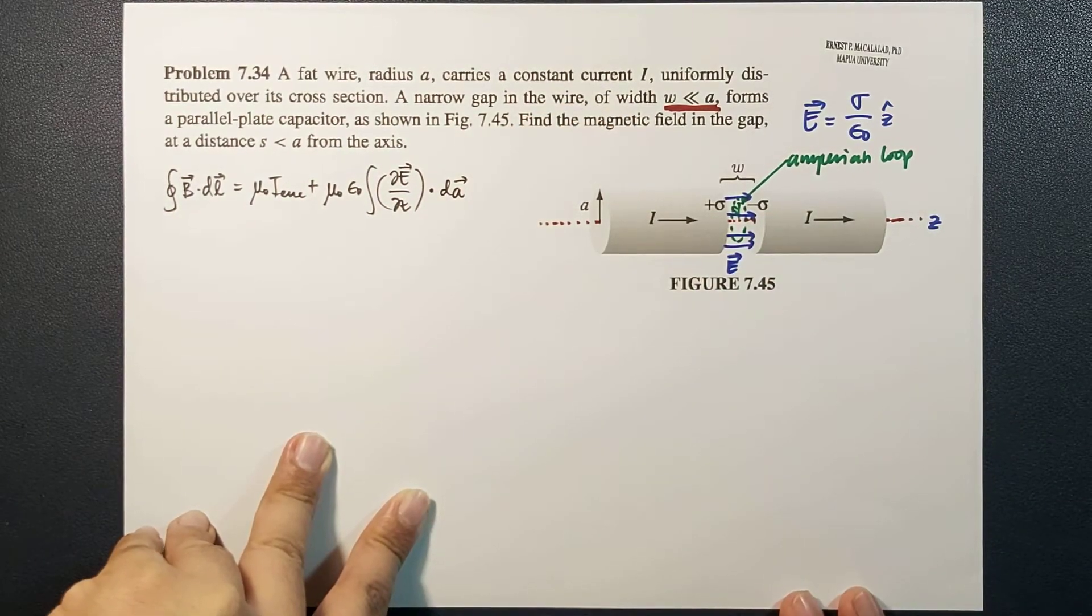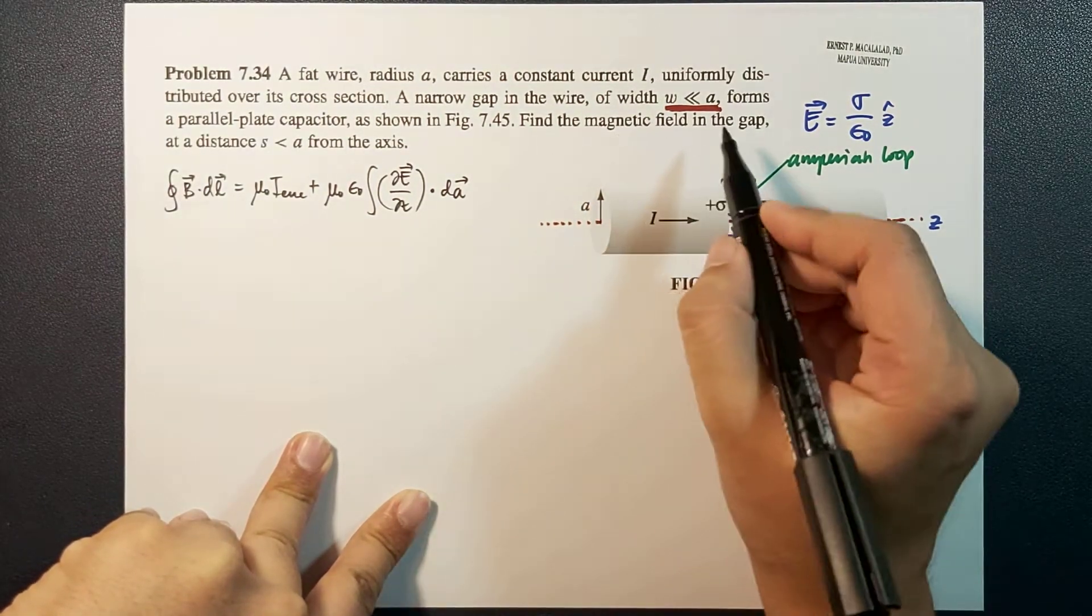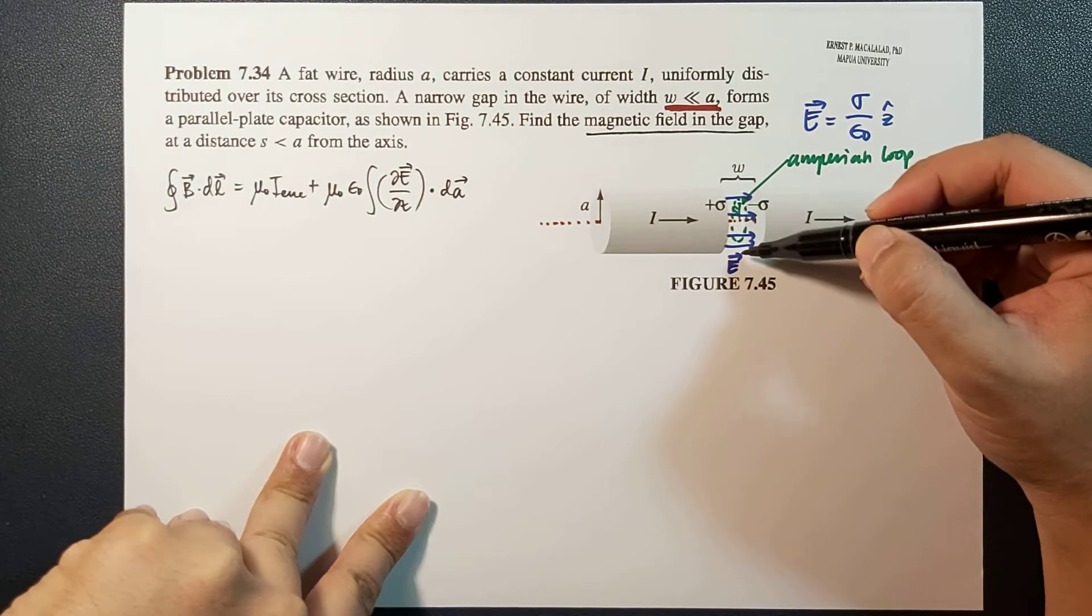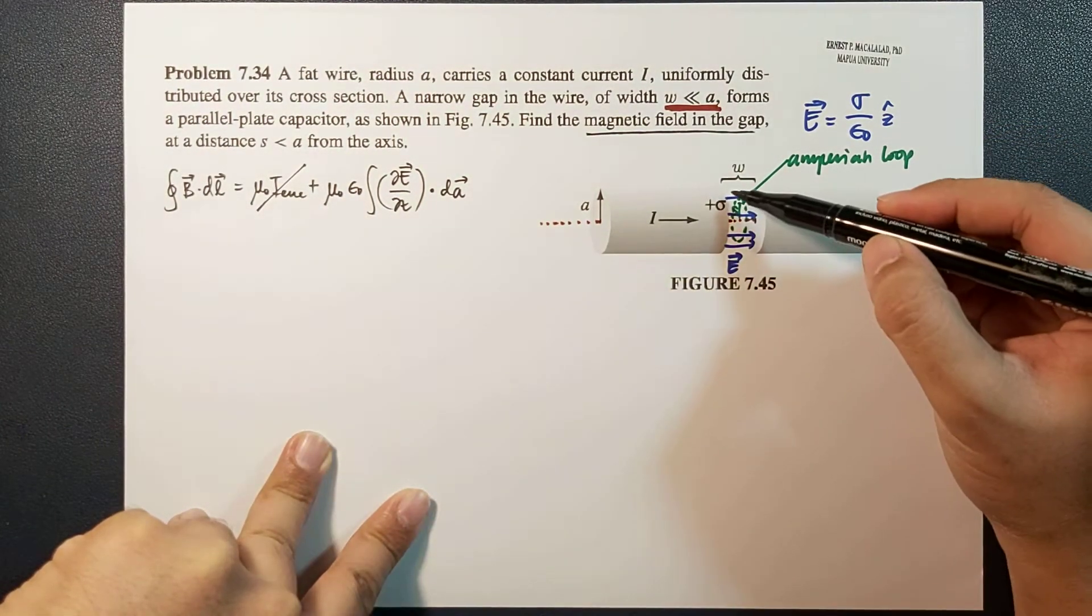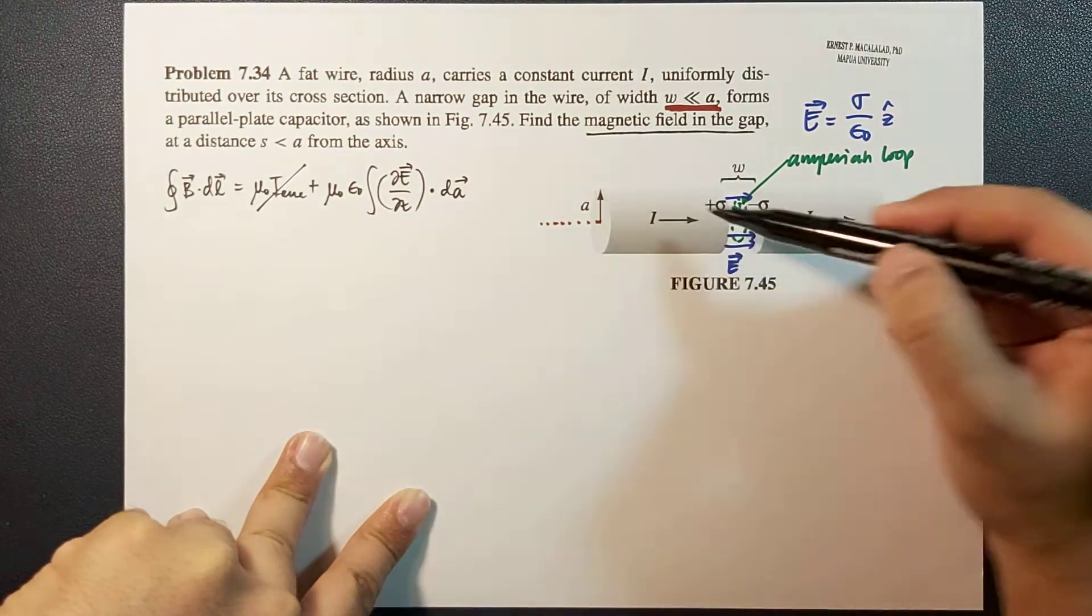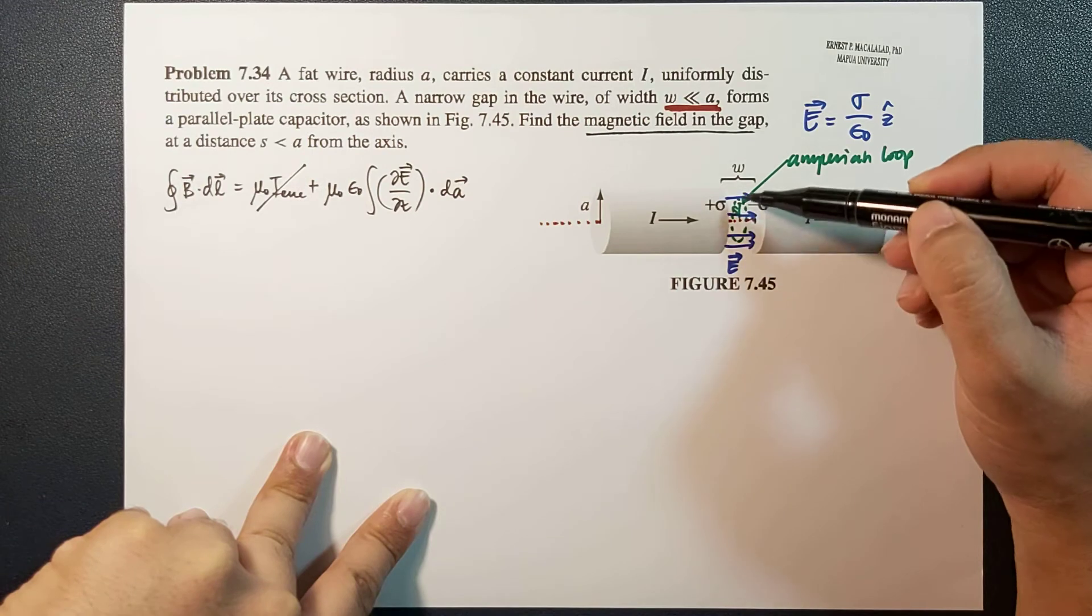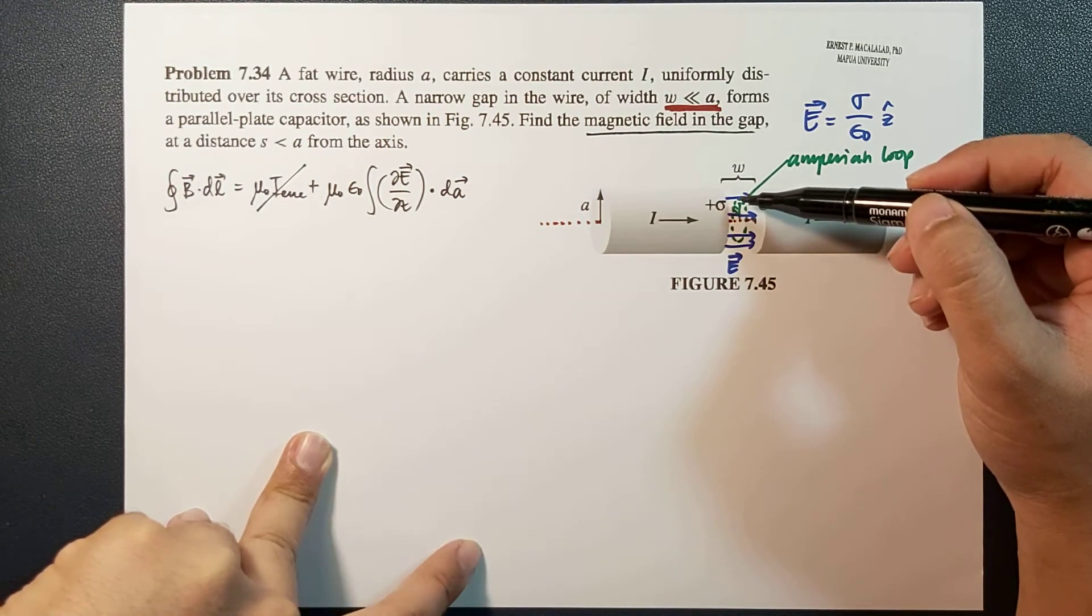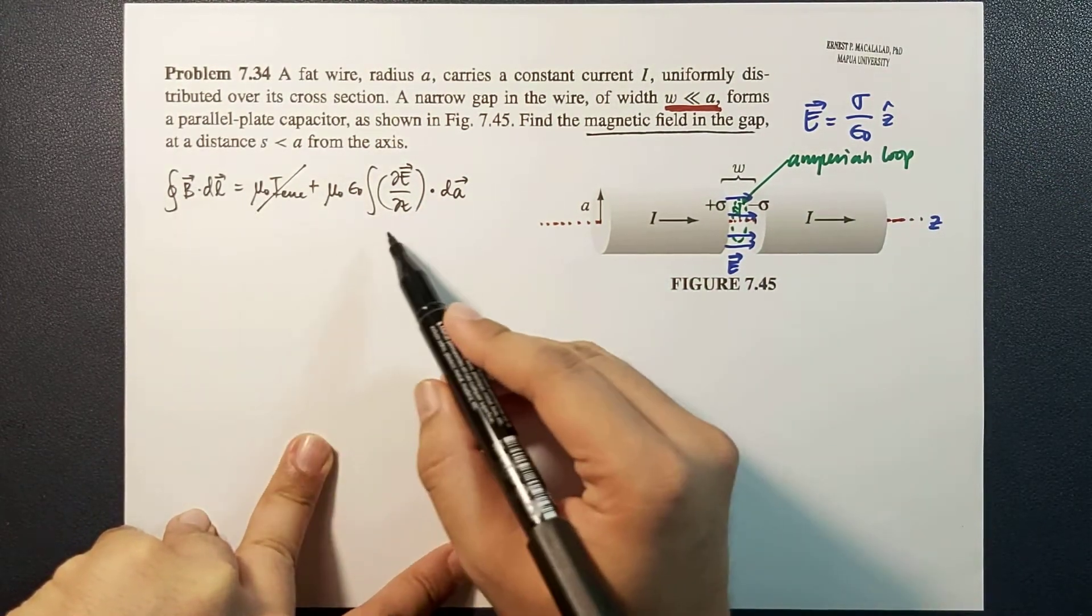Now, because our region where we want to find the magnetic field is in the gap, that means the enclosed current will be zero because there is no current flowing in the gap. So I enclosed equals zero, and we're now left with these two terms.